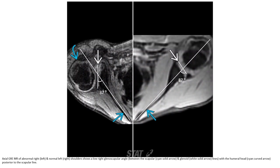CT images of abnormal right and normal left shoulder demonstrate a low right glenoid-scapula angle and glenoid with the humeral head posterior to the scapular line.